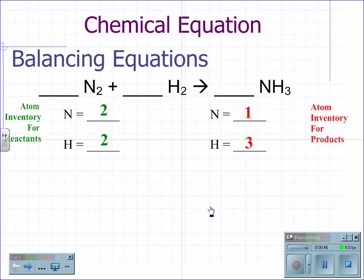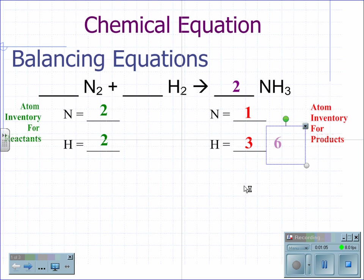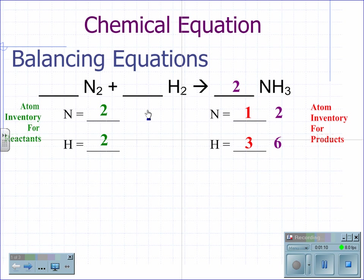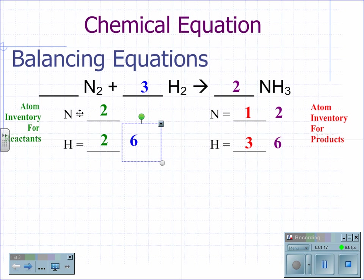Looking at this equation now, we understand that the hydrogens are not balanced and the nitrogens are not balanced. Let's start by balancing the hydrogens. Two and three have a common multiple at six. If we change the coefficient of ammonia to two, this gives us six hydrogen and two nitrogen. In order to balance this, we change the coefficient in front of the hydrogen to three, making six hydrogen, and now we have a balanced chemical equation.